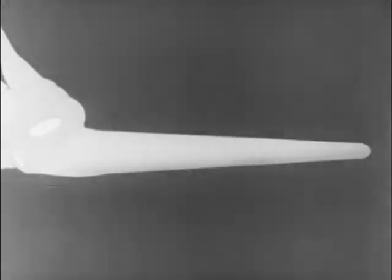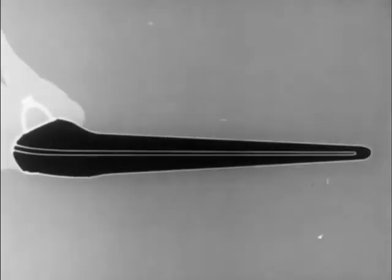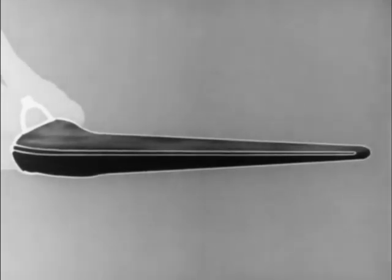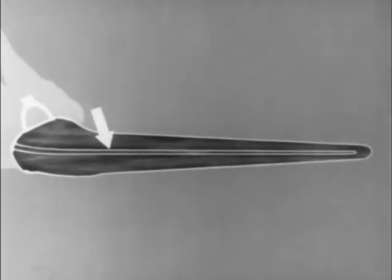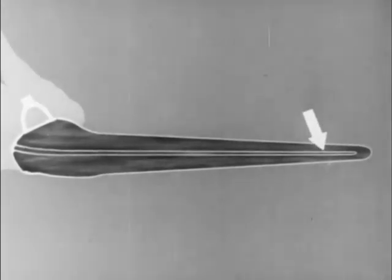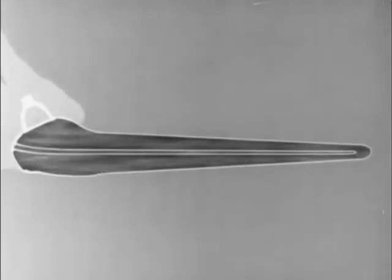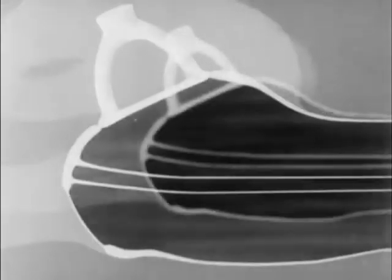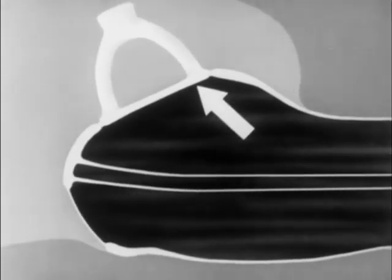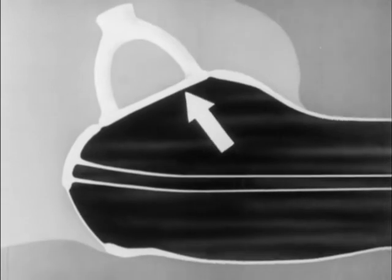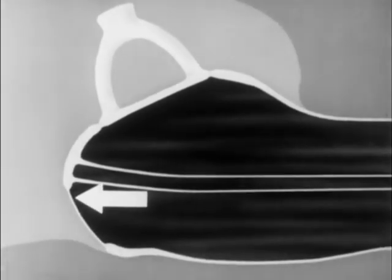If we could uncoil the cochlea and open it, we would see three chambers inside, filled with fluid. The central chamber separates the two outer chambers, except at the tip. The oval window, shown at the top, connects into the uppermost chamber.